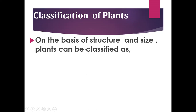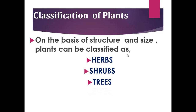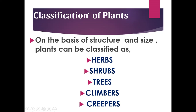On the basis of structure and size, plants can be classified as herbs, shrubs, trees, climbers, and creepers. Based on structure and size, we can classify plants into five types: herbs, shrubs, trees, climbers, and creepers.